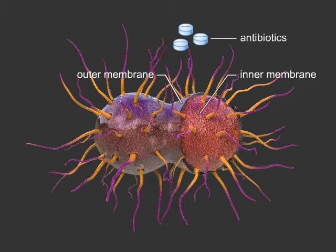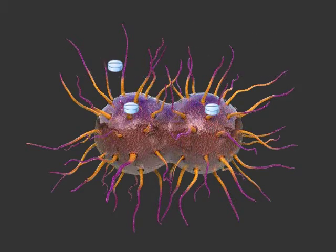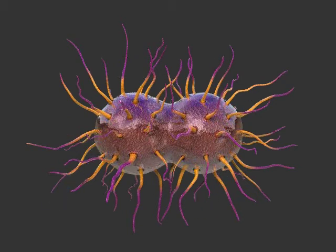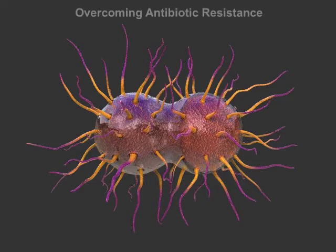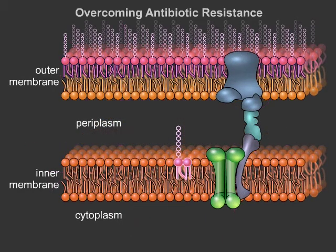Gram-negative bacteria are particularly resistant to certain types of antibiotics. These bacteria have both an inner membrane and an outer membrane, which makes it difficult for antibiotics to enter the cell. This hinders the treatment of diseases like the sexually transmitted disease gonorrhea and acinetobacter infections in intensive care unit patients.